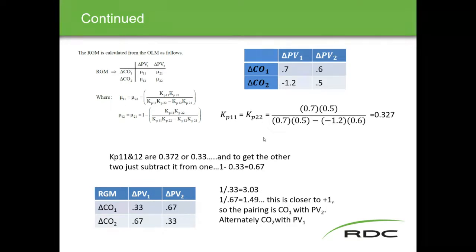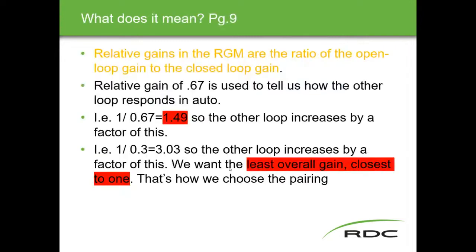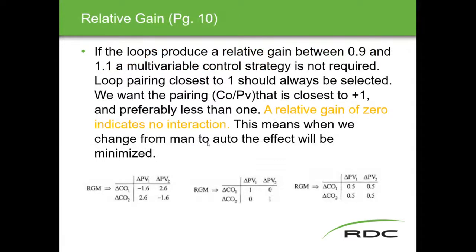It's really another week's worth of a course to get into that depth. Our expectations here are to distinguish the severity of interaction. Relative gains in the matrix are the ratio of the open loop gain to the closed loop gain. If we do that map, the other loop increases by one factor, and the other one increases by another factor. Overall we want the least gain or close to one, and that's how we end up choosing the pairing.